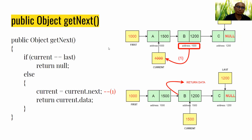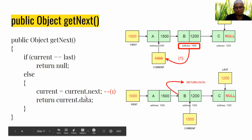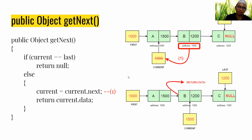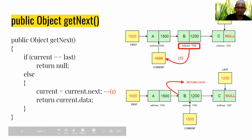After calling getFirst, current points to the first node. Then getNext is easier: we get the value of current.next, which is the address of the second node, assign it to current, and then current points to the second node.